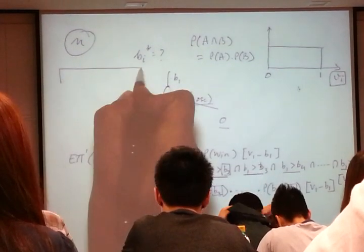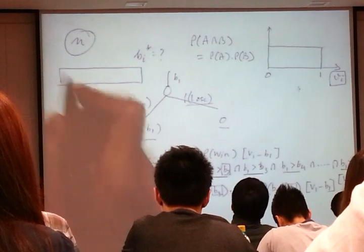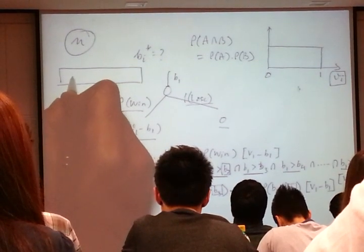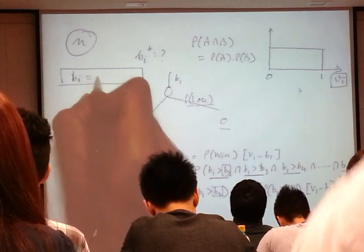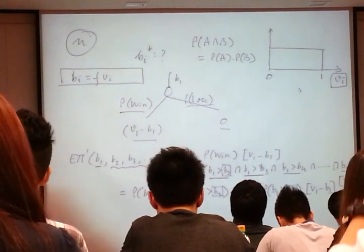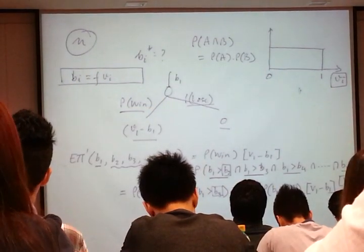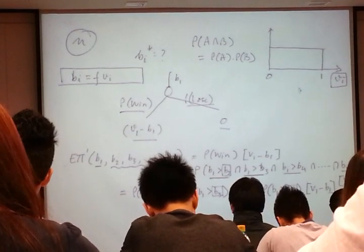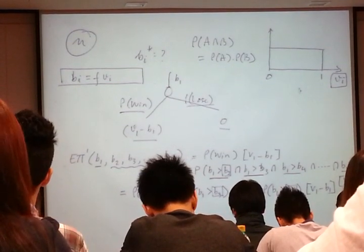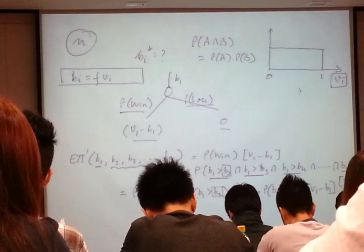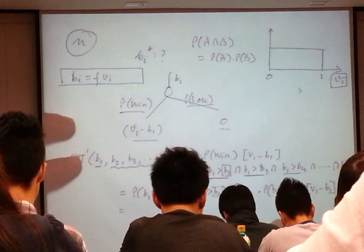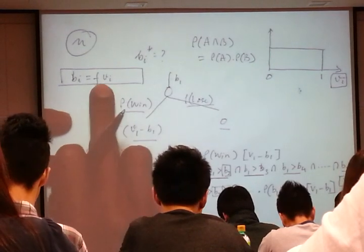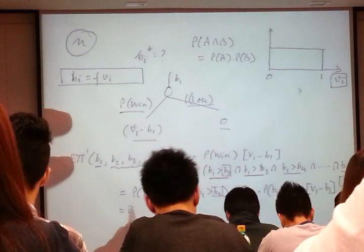So, what did we assume? We said that unless otherwise stated, every bidder assumes in a first price auction that every other bidder is bidding a fraction of his valuation. This is our bidding function. There is no point bidding your valuation. Therefore, you will bid slightly lower. Every bidder bids a fraction of his valuation. That allows me to substitute B2, B3, and BN with the respective valuations of the bidders.